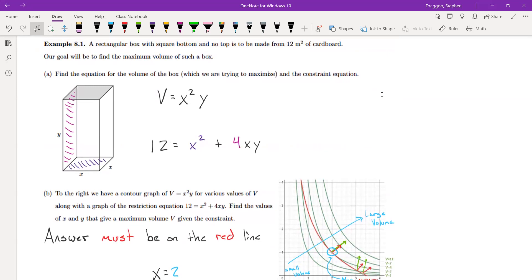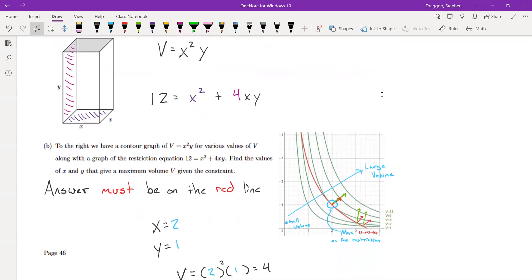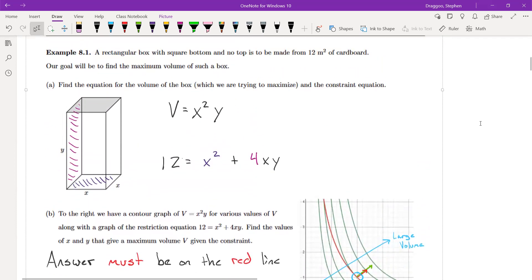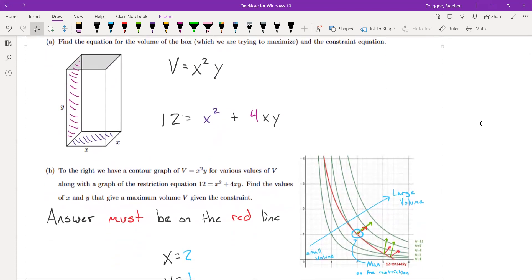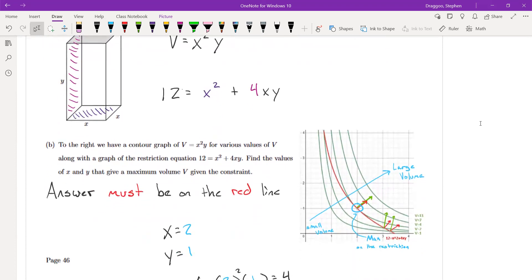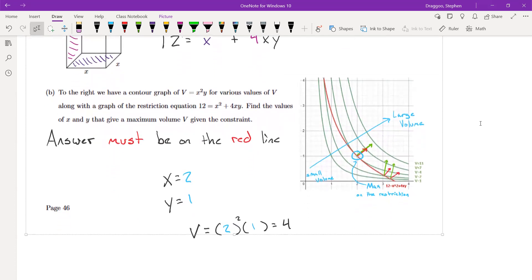But for starters, Lagrange multipliers, we're still looking to find maximums or minimums of some function that we're specifically going to be looking at along some boundary with this particular method. Our motivating example, which I've borrowed from Ryan McCombs, we are looking to maximize the volume of some box given a constraint, which is that x squared plus 4xy is equal to 12. That's the maximum amount of material, 12 maybe square feet of material that we have to build that thing.